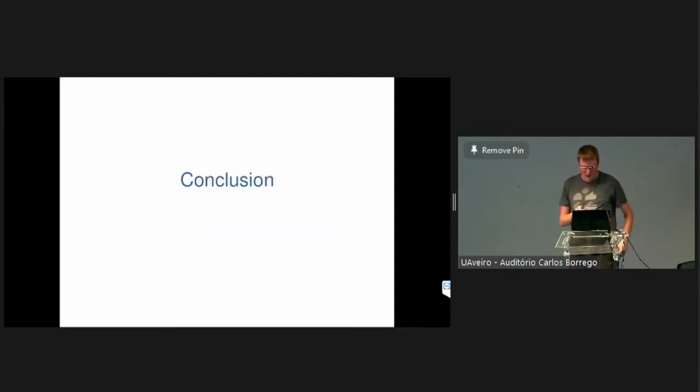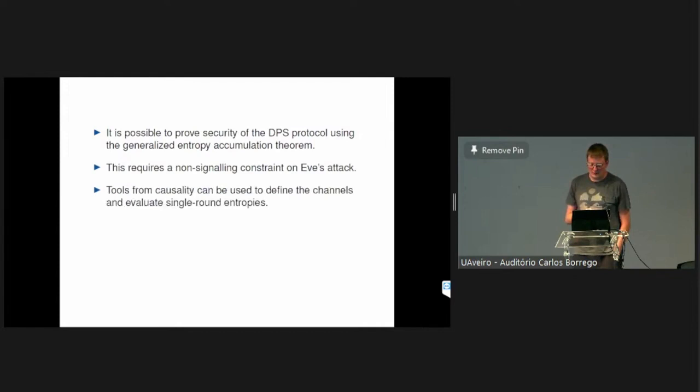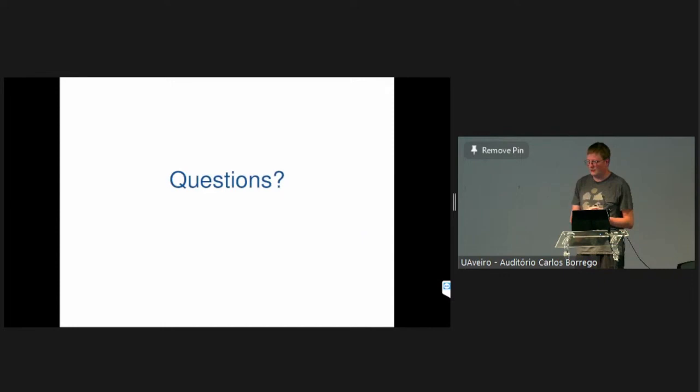So to conclude, we have shown that using the generalized entropy accumulation theorem it is possible to prove security of this differential phase shift protocol. To do so we require a non-signaling constraint on Eve's attack, which then allows us to employ these tools from causality to define both the channels and then also to evaluate this single round von Neumann entropy. And then that a constraint of this form really is necessary if one wishes to reduce the analysis to collective attacks. So this is not just some artifact of our proof technique but it really is an inherent property of the protocol. Okay and with this I'm done with my talk and I think we have time for some questions.